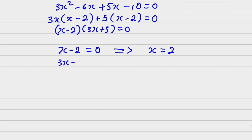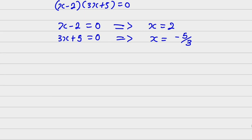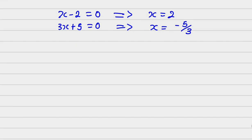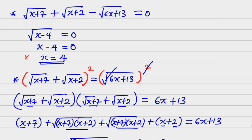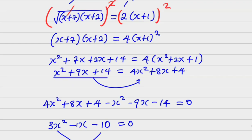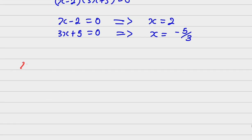So there are three answers: x equals 4 from the first case, x equals 2, and x equals minus 5 over 3. But I think there is an issue with one of these.